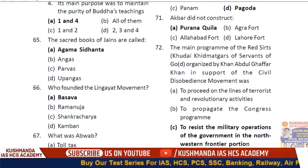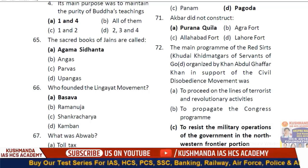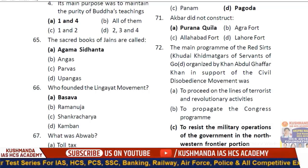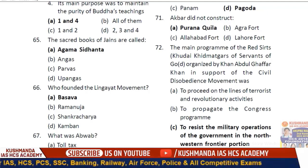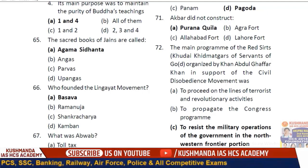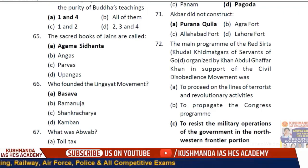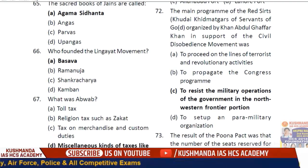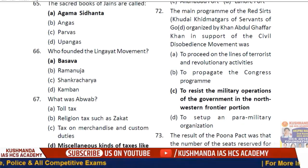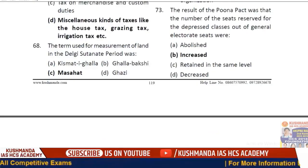Question: Akbar did not construct Purana Qila — it was built by Sher Shah Suri. Akbar built the forts of Agra, Lahore, and Allahabad. Question on the Red Shirts — Khudai Khidmatgar (Servants of God) was organized by Abdul Ghaffar Khan in support of the Civil Disobedience Movement.